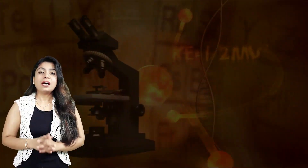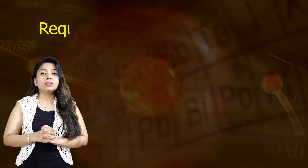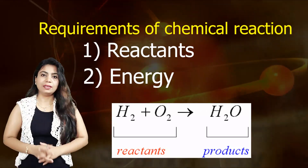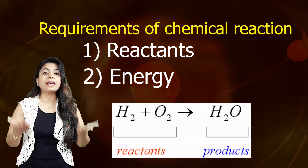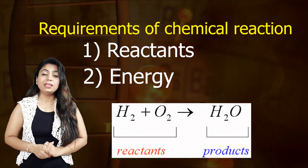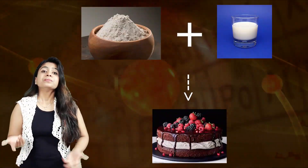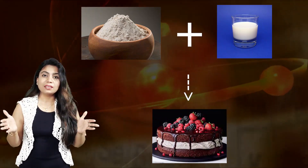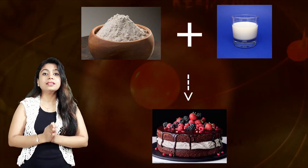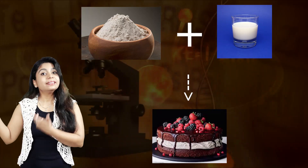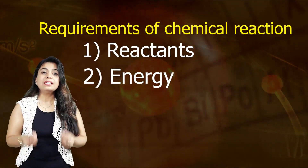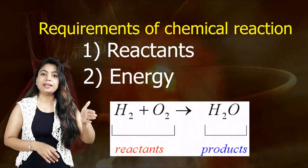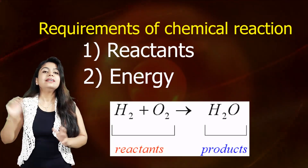What are the requirements for a chemical reaction? The basic requirements are reactants, energy, and catalyst or enzyme. Reactants are the substances that undergo chemical reaction. For example, to make a cake you need flour, water, and baking soda — these are the reactants. When combined, the product — cake — is formed. Reactants are always written on the left-hand side of the chemical equation and products on the right-hand side.